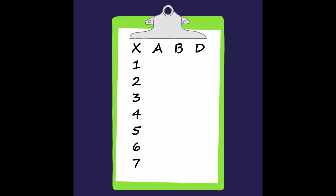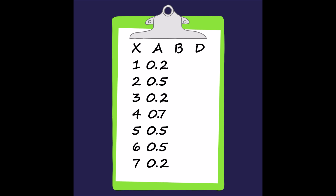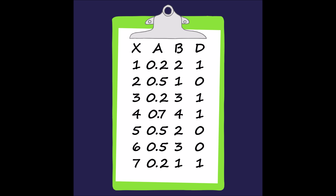We have seven records labeled 1 through 7. Attribute A has three possible values: 0.2, 0.5, and 0.7. Attribute B has four values 1 through 4, and a decision feature D which can be either 0 or 1. When we discretize our dataset, we reduce the number of distinct values in the attributes.